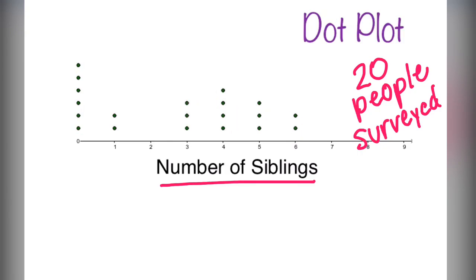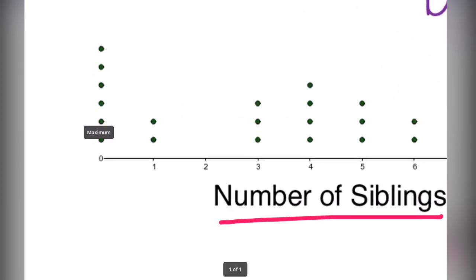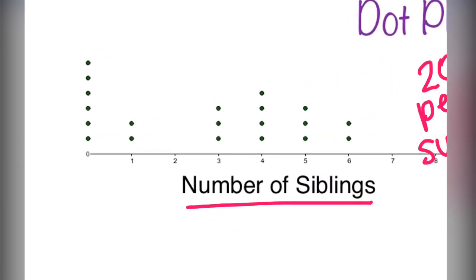When we look at the data, we will start with zero. We notice there are six dots on zero, so that means six out of the 20 people said, I have no siblings.